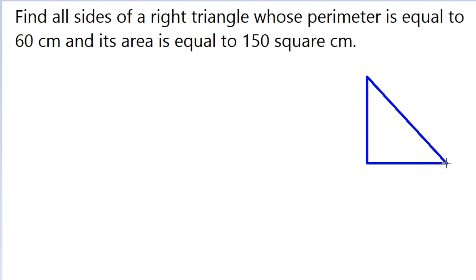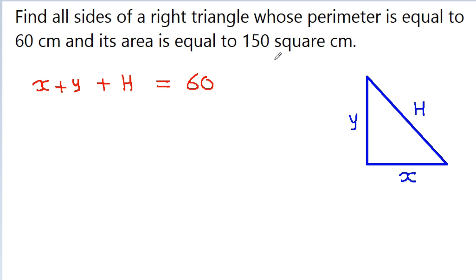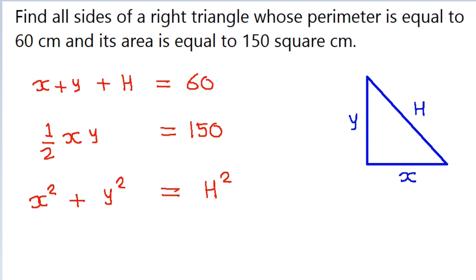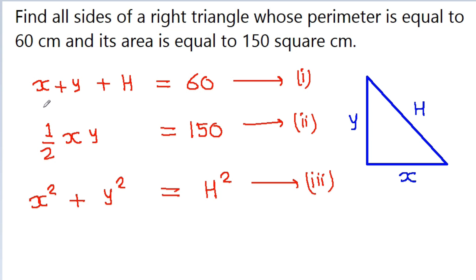We have a right triangle. If we assume the base length x, the height y, and the hypotenuse h, then it is given that the perimeter is equal to 60 cm: x plus y plus h equals 60. The area is 150 square cm, so area equals half times x times y equals 150. And we have another equation: base squared plus height squared equals hypotenuse squared, i.e., x² + y² = h². These are equations 1, 2, and 3, and we have to find the values of x, y, and h.